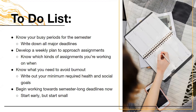Here is your to-do list for what you should be working on at the beginning of the semester — your new semester planning to-do list. First: know your busy periods for the semester. Write down all of your major deadlines, look through your Canvas pages and syllabi, and write them all down in a calendar or planner. After that, develop a weekly plan to approach assignments — choose the blocks when you're working on specific homework assignments, and then also choose the one or two blocks when you can work on those long-term semester projects.